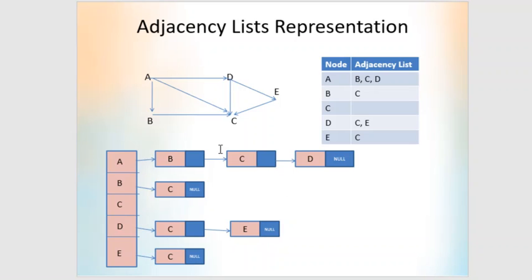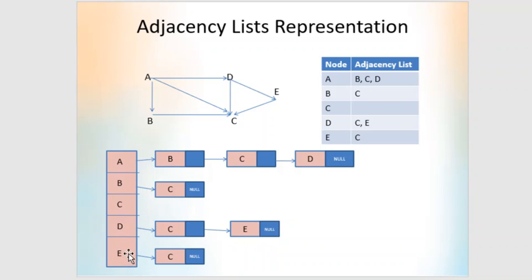In the array representation, we have an array with elements A, B, C, D, E. Each array element points to a linked list containing its adjacency list. A points to B→C→D→null. B points to C→null. C has no list. D points to C→E→null. E points to C→null. This is the adjacency list representation for a directed graph.